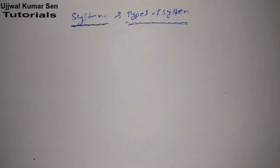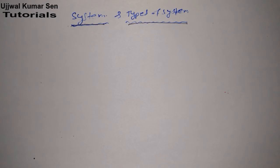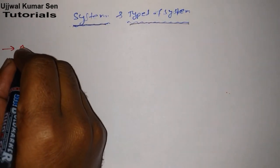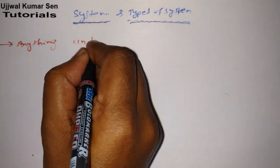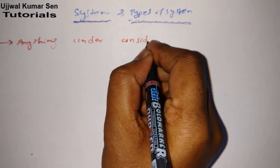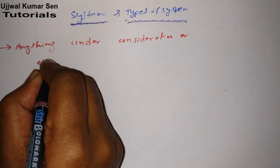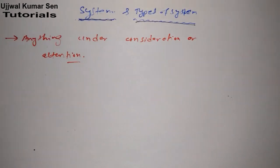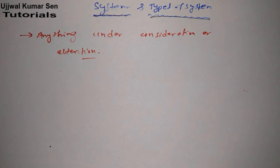When talking about system, boundary and surrounding are directly related, but not universe, because universe is everything. For example, as I am creating this video, my attention is totally focused on the video tutorial — that is what system means. Where your attention is focused, that is known as system. The definition is: anything under consideration or attention is known as system.